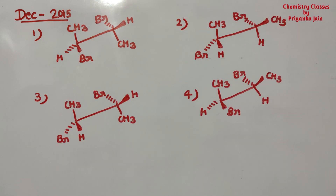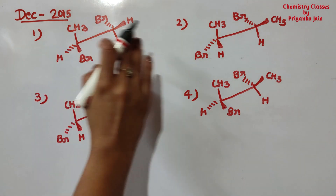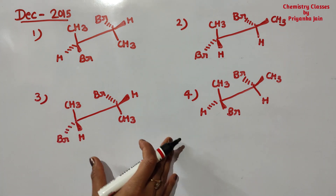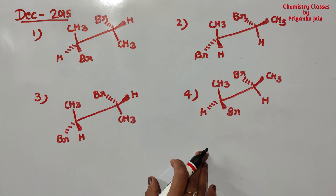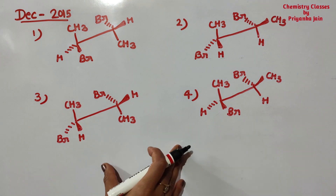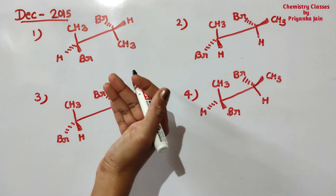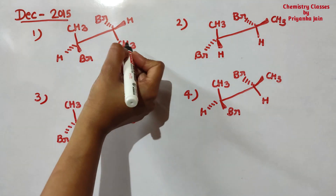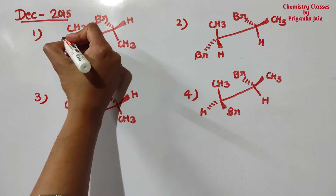Now look at this question from December 2015 question paper. We have to identify the two enantiomeric pairs — out of these four molecules, which two are enantiomers. For this, you have to convert them to the Fischer projection. I explained how to convert structures in my first lecture, so you can see that video.